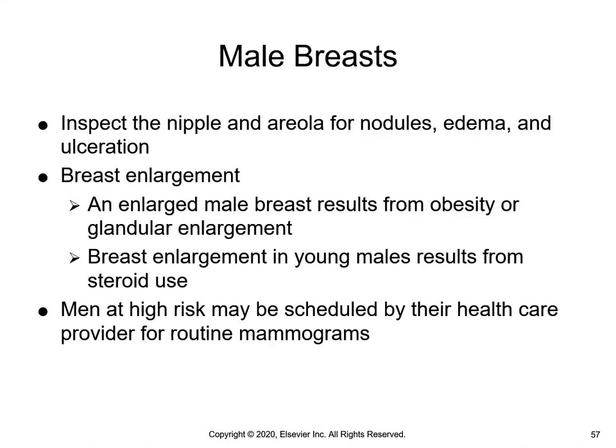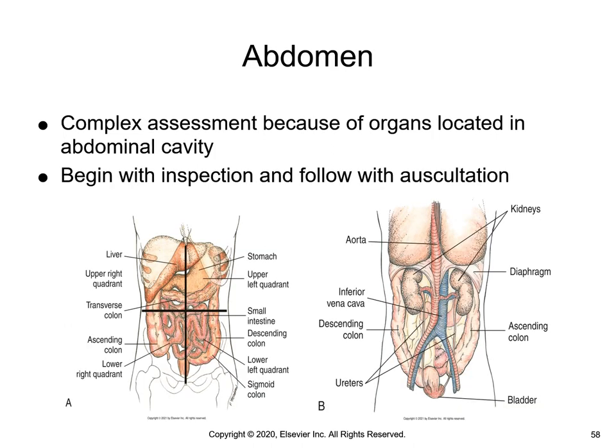When assessing the male breast, the same technique is used to palpate for masses as in the female breast examination. Men who have first-degree relatives with breast cancer are at risk for breast cancer and may be scheduled by their health care provider for a routine mammogram. The examination of the abdomen assesses the lower gastrointestinal or GI tract, liver, stomach, uterus and ovaries, kidneys and bladder. Abdominal pain is the most common symptom reported.